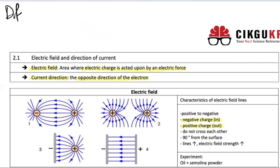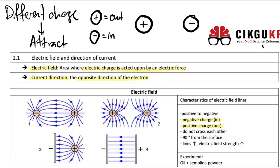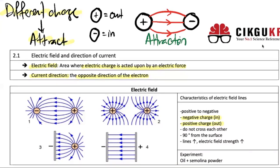If there is a different charge, the particles attract each other. The positive field moves out and the negative field moves in. So if we have one positive particle and one negative particle, the electric field from the positive moves out toward the negative. Because they have different charges they attract, producing an attraction force.